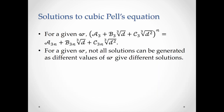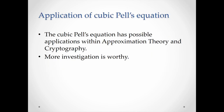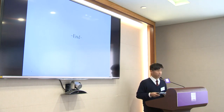However, I observed that for a given w, not all solutions can be generated, and it is not certain that this method can generate all the other solutions to the cubic Pell's equation. Moreover, there are some limitations. Sometimes there may not be a non-zero rational w that can be chosen such that aₙ, bₙ, and cₙ are integers. And sometimes, although the required value exists, it is too difficult to find. The cubic Pell's equation has possible applications within approximation theory and cryptography, so I think more investigation is worthy. This is the end of my presentation. Thank you.